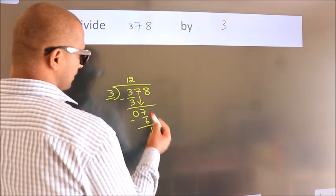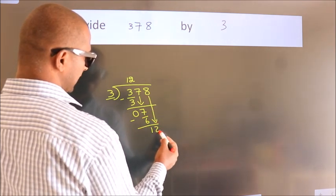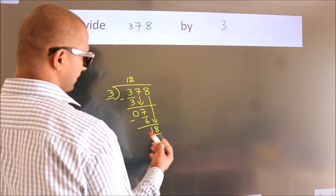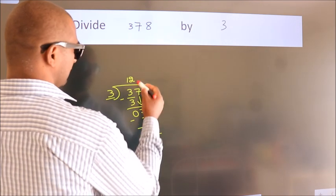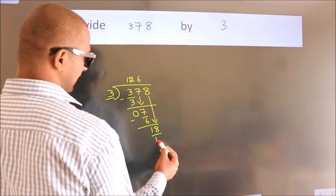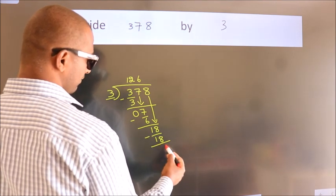After this, bring down the beside number. So, 8 down, so 18. When do we get 18? In 3 table, 3 times 6 is 18. Now we subtract. We get 0.